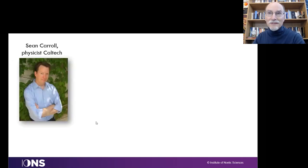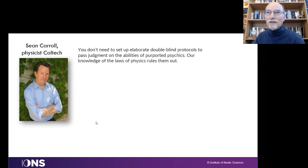And so here's an example of that. So here's Sean Carroll, a well-known physicist at Caltech, who has written that you don't need to set up elaborate double-blind protocols to pass judgment on the abilities of reported psychics. Our knowledge of the laws of physics rules them out.